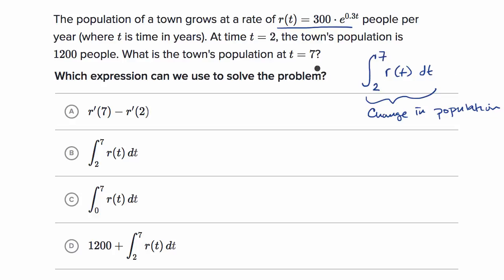To get the population at seven, we use the population at T equals two — which is 1,200 people — plus the integral of the rate function from two to seven. That integral gives the change in population from T equals two to T equals seven. So we can see clearly that is choice D.